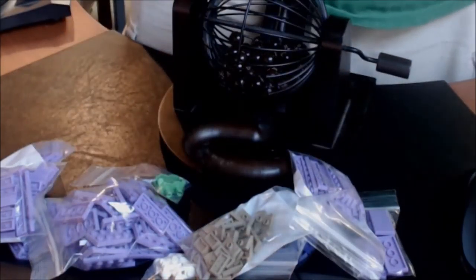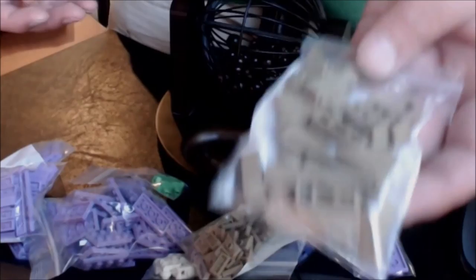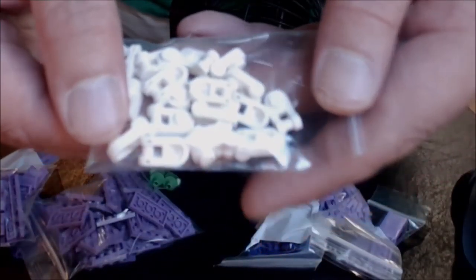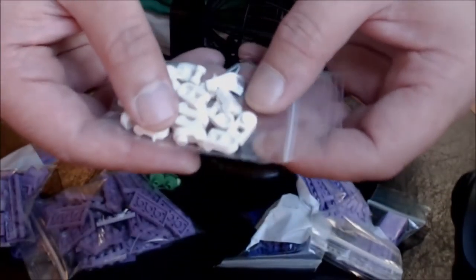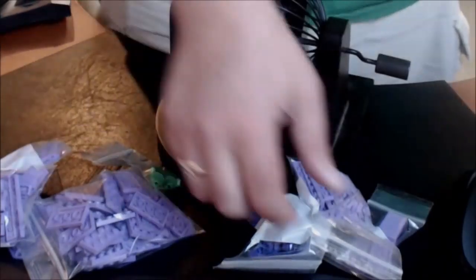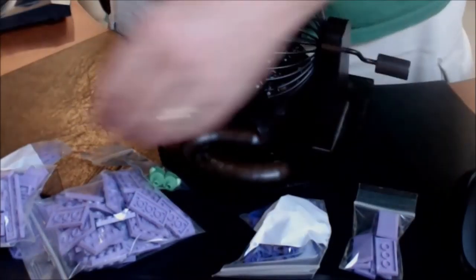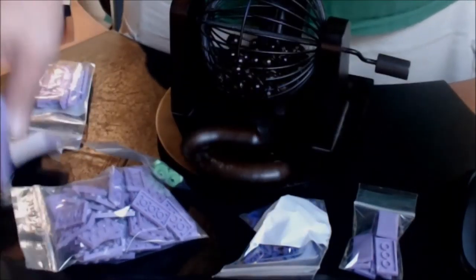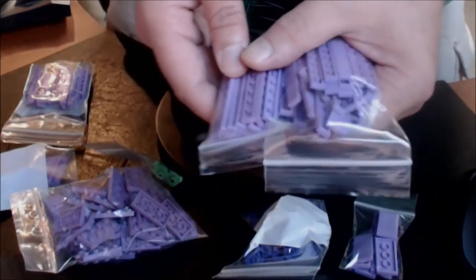Who stopped by and picked up some dark tan 3x1 slopes, some dark tan 1x2 jumpers, some of these white modified plates right here, very cool shape, and then a whole bunch of medium lavender 1x6, 1x8 tiles.